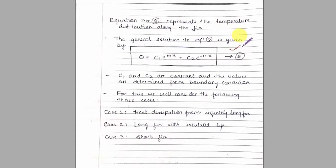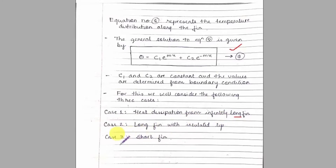Here C1 and C2 are constants, determined by applying boundary conditions. To find C1 and C2, we will consider three cases: case one — heat dissipation from a long fin; case two — a long fin with an insulated tip; and case three — a short fin. We will use equation 9 again and again to find C1 and C2 for each case. We will have a separate video on each case. Till then, keep watching — happy learning. Thank you.